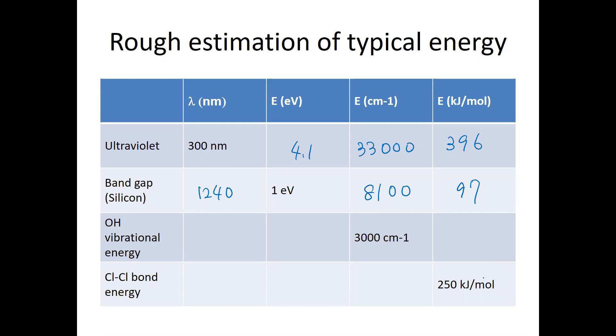And about OH vibrational energy, the wavelength, once you got the energy in Kaiser, can be converted into the electron volt power, which is 0.37 and quite small, corresponding to 3,400 nanometer, which is in the visible infrared region. And in energy in the kilojoule per mole, it's around 40.